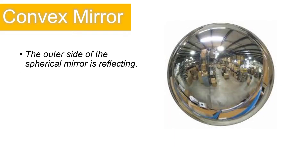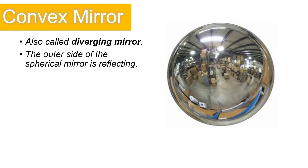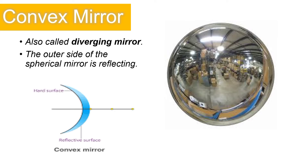The second type of curved mirror is what we call a convex mirror. The outer side of the spherical mirror is reflecting, and it is also called a diverging mirror. The picture on the right is an example of a convex mirror.